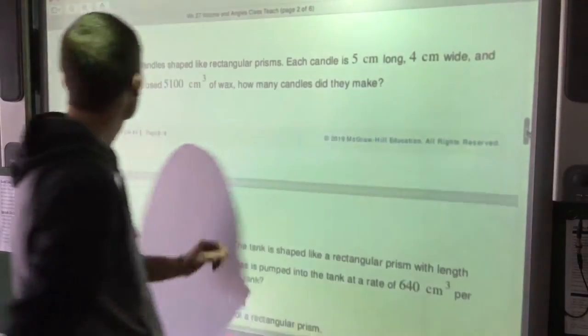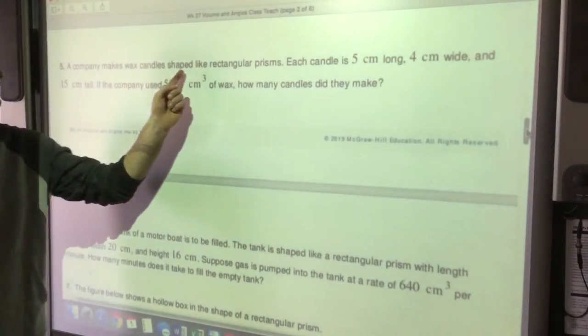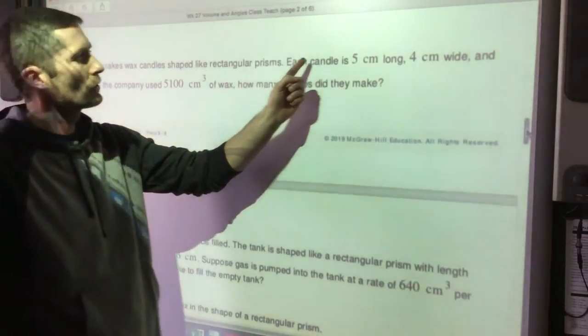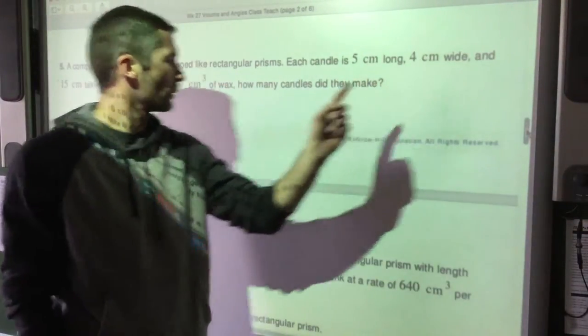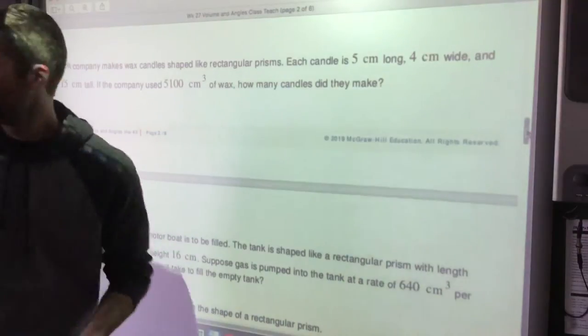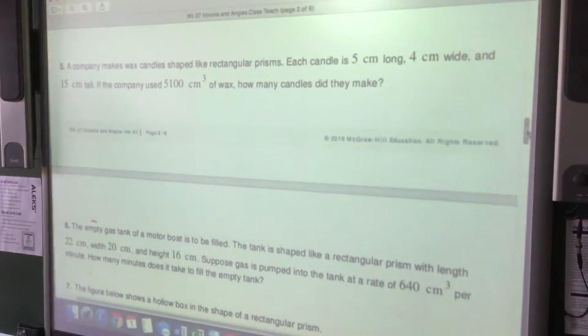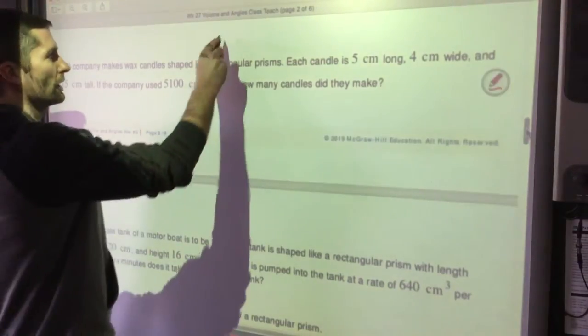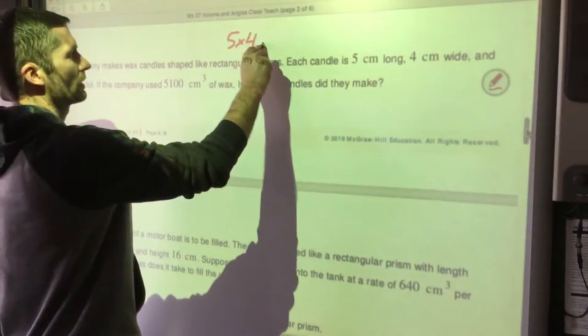Next question. We've got some word problems. Let's use a calculator. A company makes wax candles shaped like rectangular prisms. Each candle is 5 by 4 by 15. Okay, so first let's figure out the volume of each candle, 5 times 4 times 15. 5 times 4 is 20, 20 times 15 is 300. So we have 300 cubic centimeters. I should write that down even if I'm using a calculator.